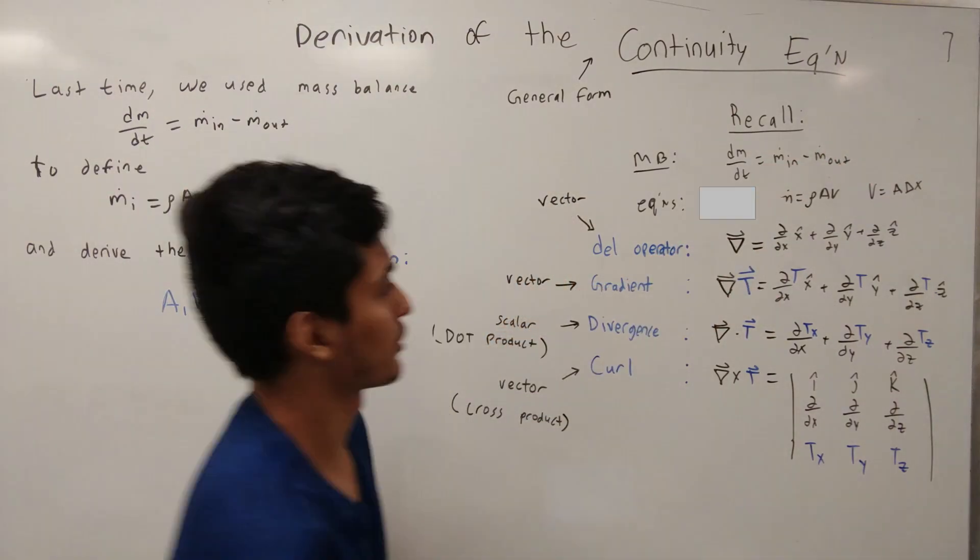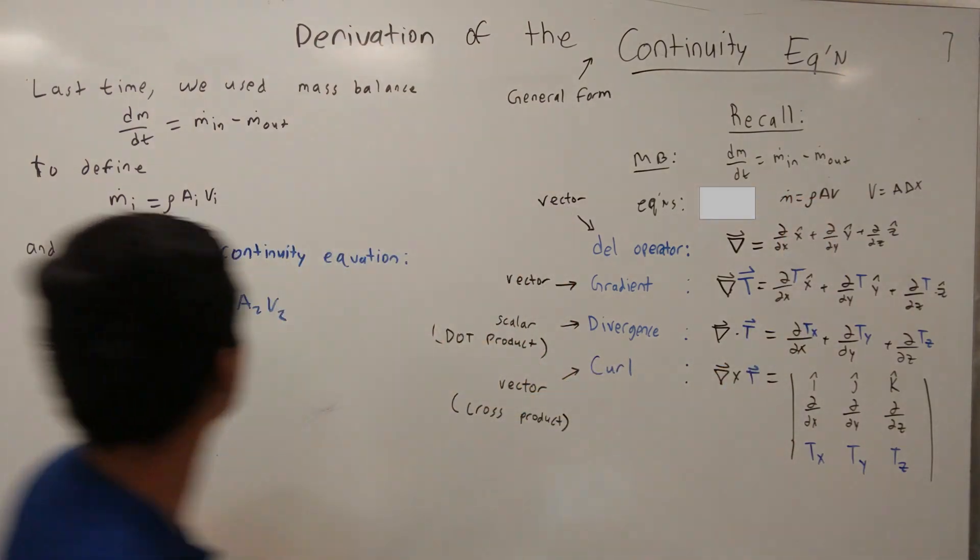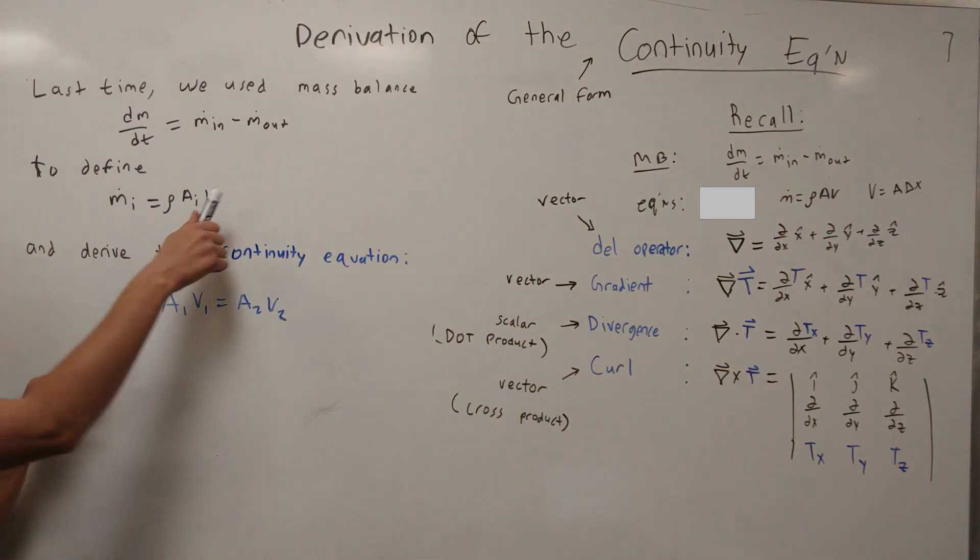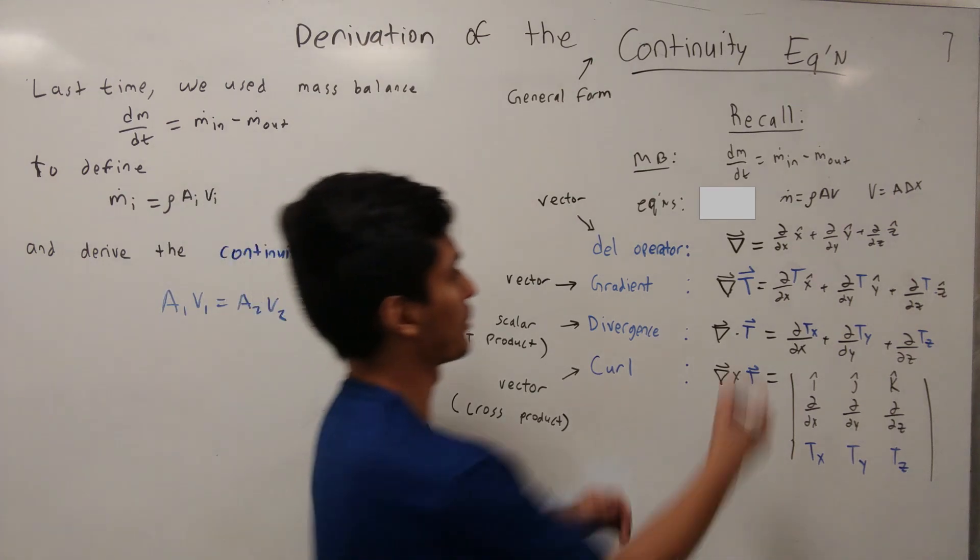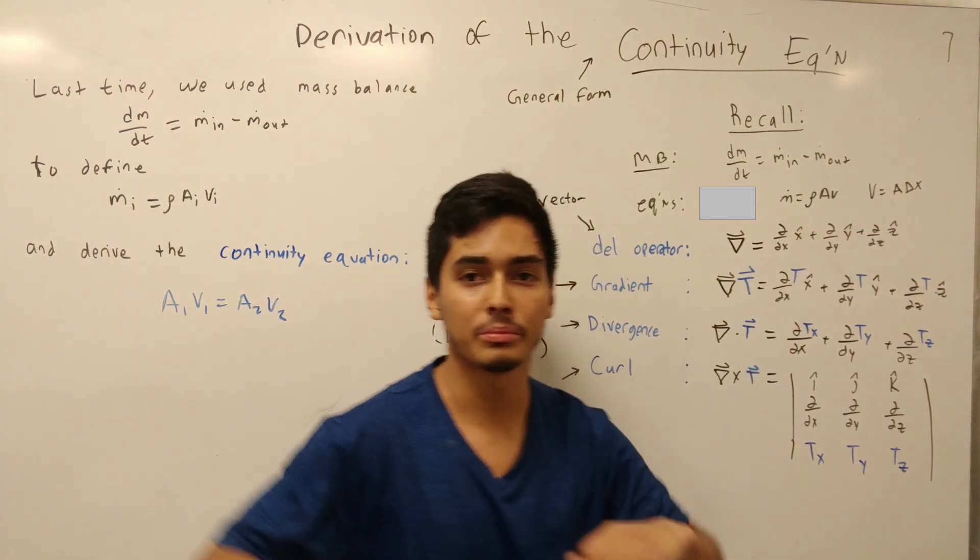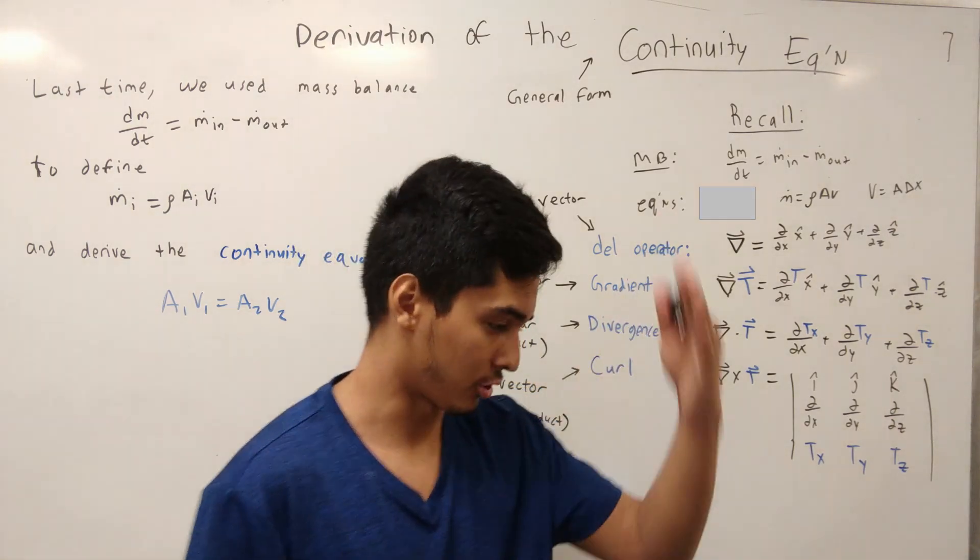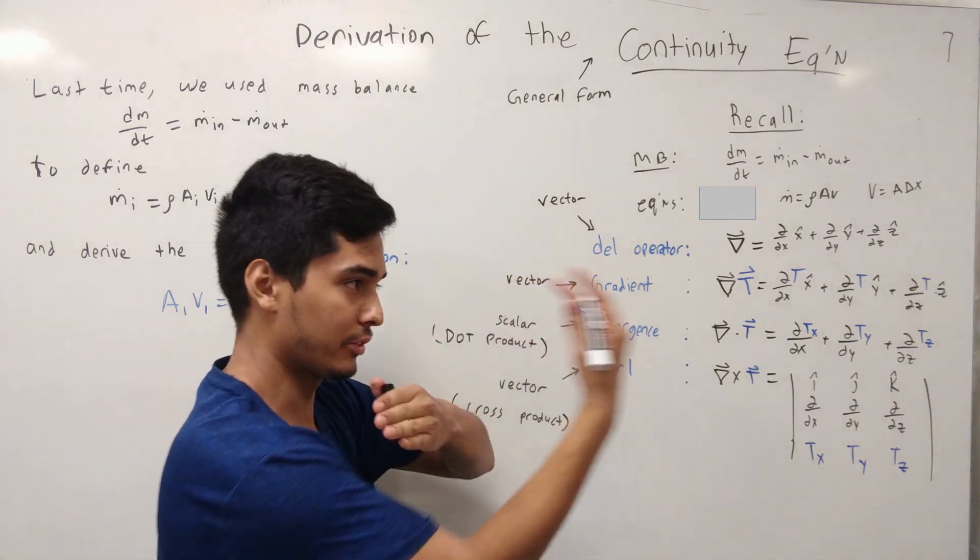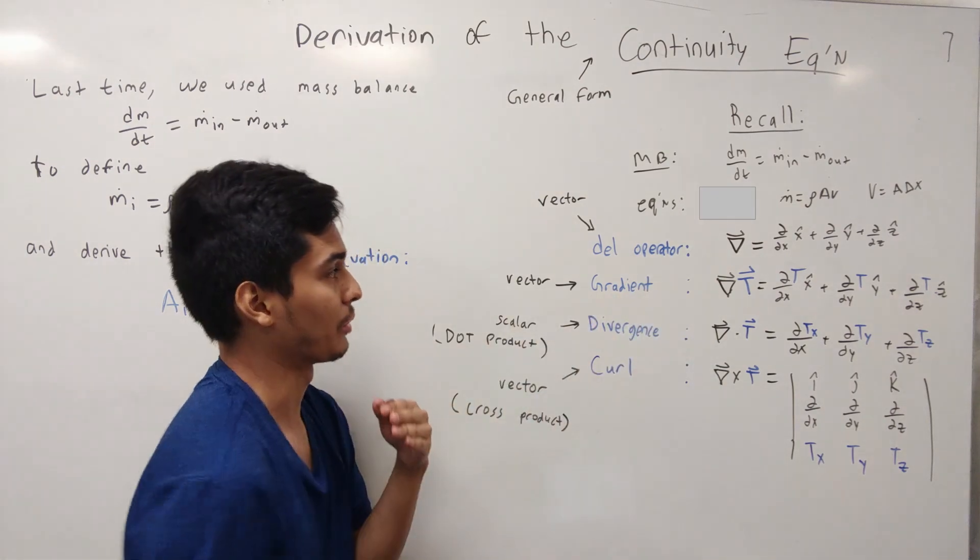And some general equations, such as mass flow rate, we derive to be density times area times the velocity. So, this is volume and this is velocity, careful with your little v's. And volume for, say, a pipe or a box, is going to be the cross-sectional area times the displacement of the fluid going through that pipe.